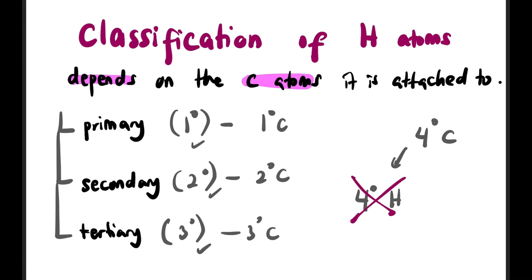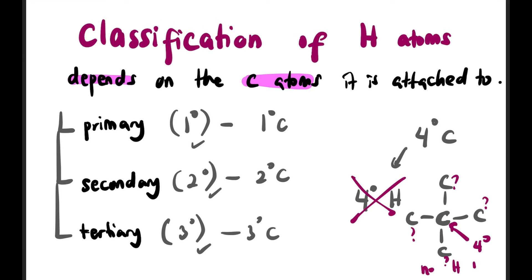If there is a quaternary carbon — a carbon bonded to 4 other carbons — and each carbon still has 4 bonds total, then there is no hydrogen attached to it. So a quaternary carbon has no hydrogen.